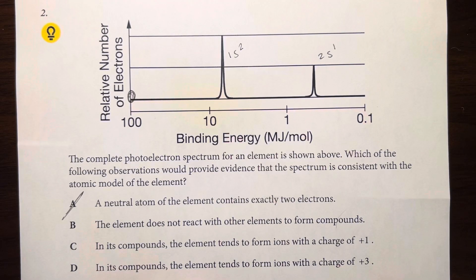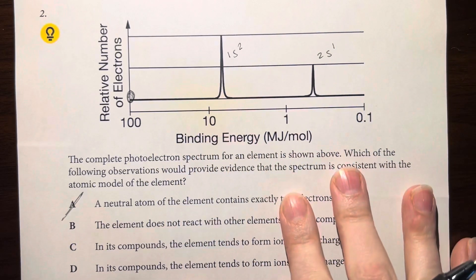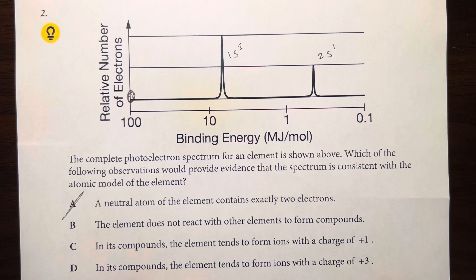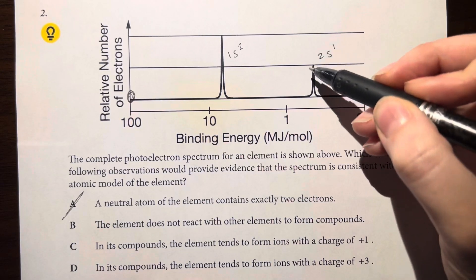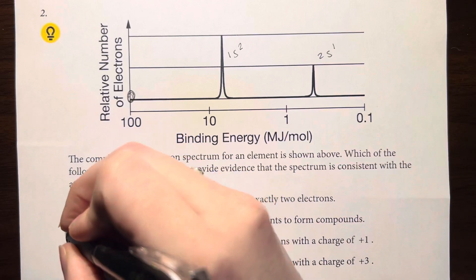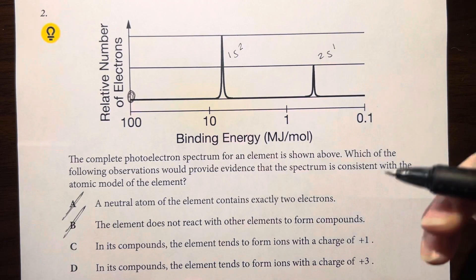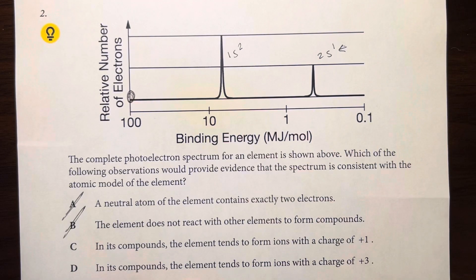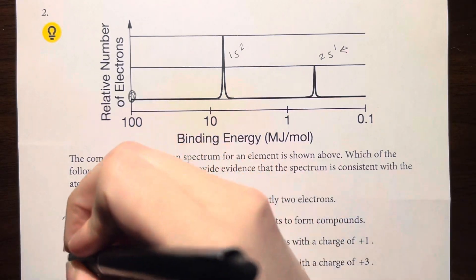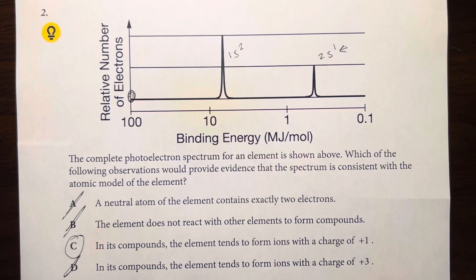Option B states the element does not react with other elements to form compounds. That wouldn't really be shown by the photoelectron spectrum — in fact, this element is likely pretty reactive since it has one valence electron. Option C says in its compounds the element tends to form ions with a +1 charge, meaning it loses that one 2s valence electron. That sounds correct. Option D says +3 charge, which would mean losing all electrons — incredibly unlikely. So option C, the +1 charge from losing the valence electron, is our best choice.